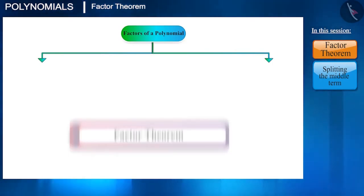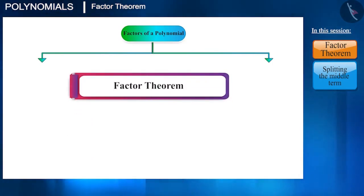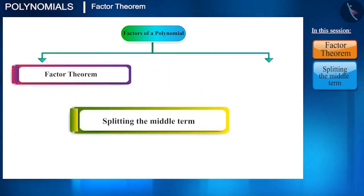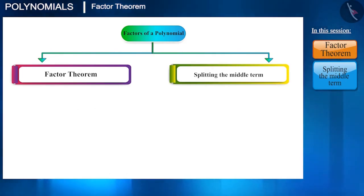For this, we have two methods. One is factor theorem and the second is splitting the middle term. Suppose we are given a quadratic polynomial 2x² plus 7x plus 3. From this, we will derive the factors using the factorization method and splitting the middle term method.